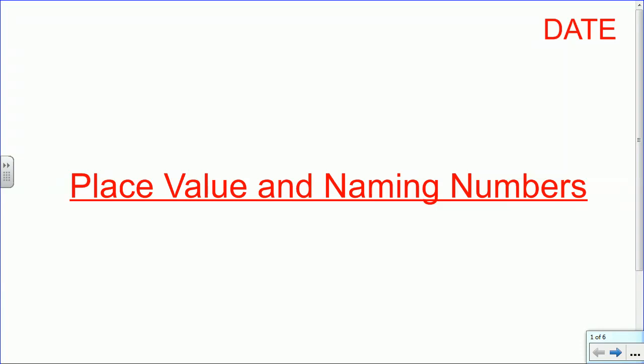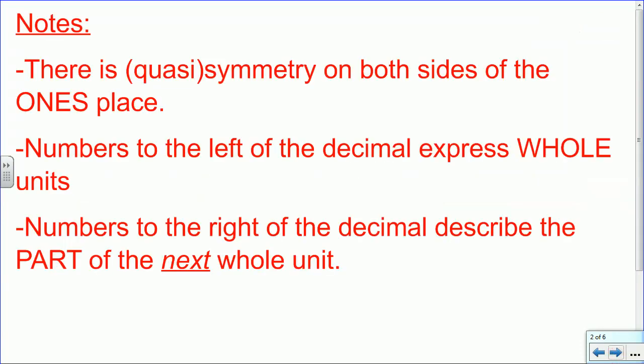As we get to know mixed numbers and decimal places, let's talk about naming numbers. Here are the notes you need to take. They're all in red. The first one is, there is a quasi-symmetry on both sides of the ones place. Now, you're thinking, what in the world are you talking about? Quasi is a word that means something that appears to be true, but is not exactly true. So if you look on either side of the ones place, it looks like you have a mirror image, or symmetry, but it's not perfect, so that's why I call it a quasi-symmetry.